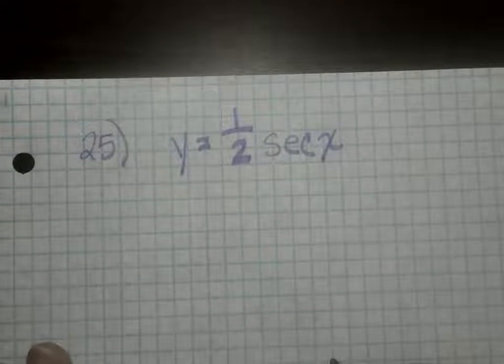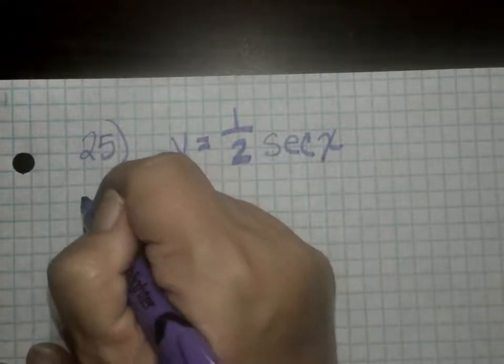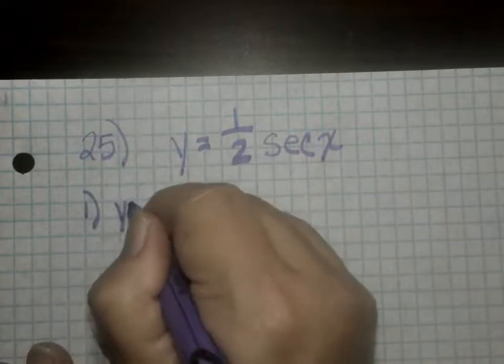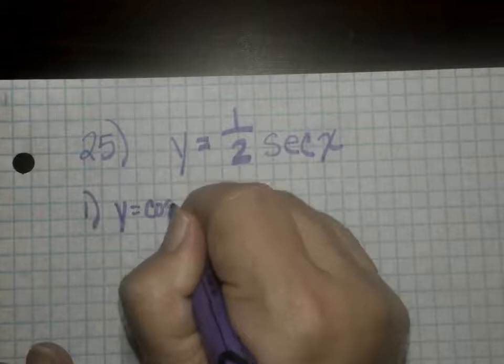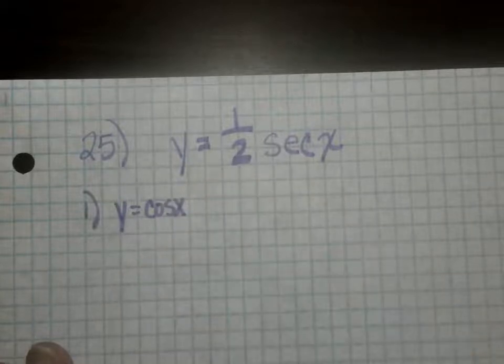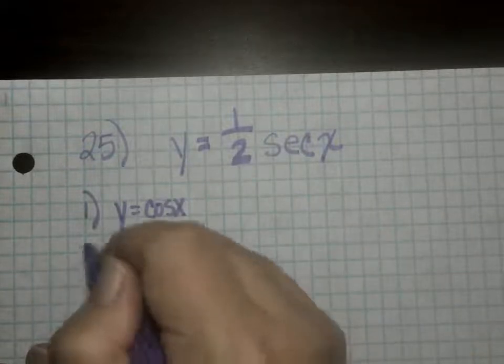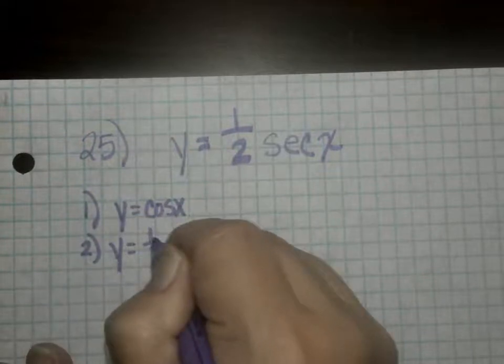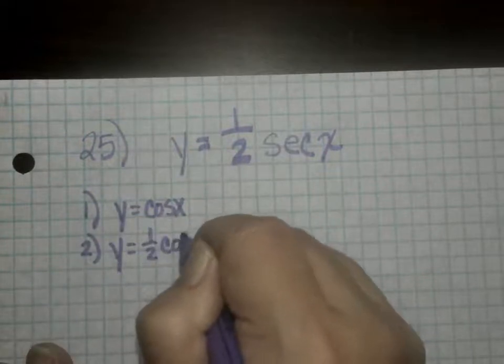So here is your strategy for doing this problem. The first thing you want to do is you want to graph y equals cosine x, because that's the parent function. And then you want to graph y equals one half cosine x.